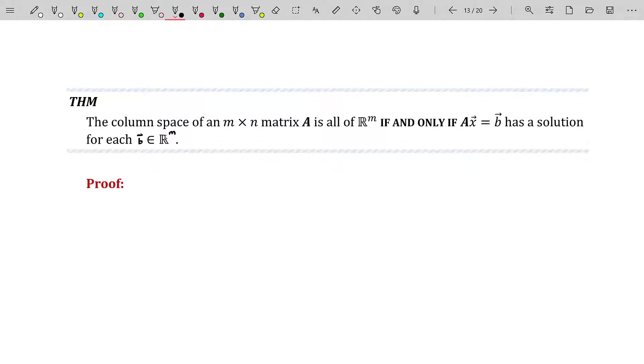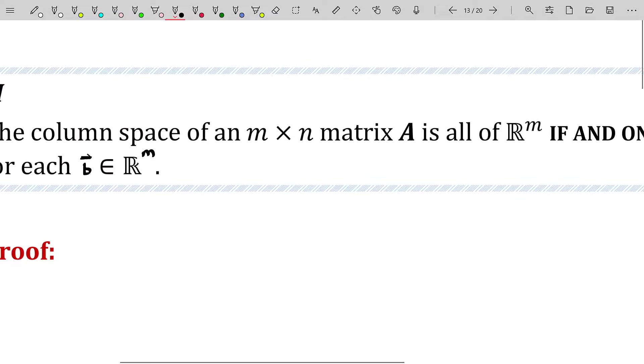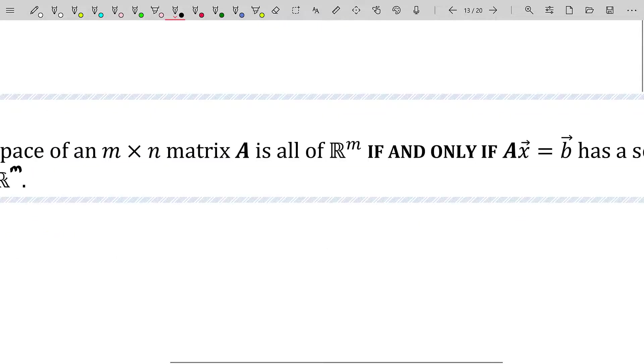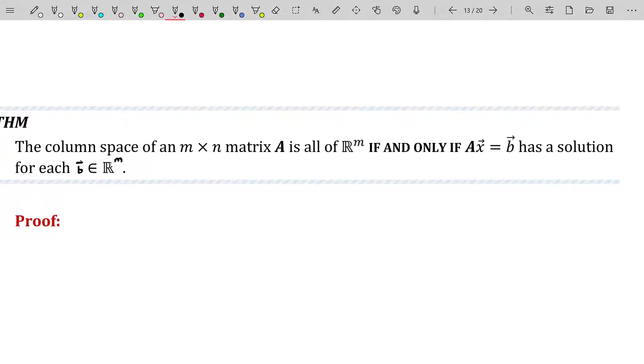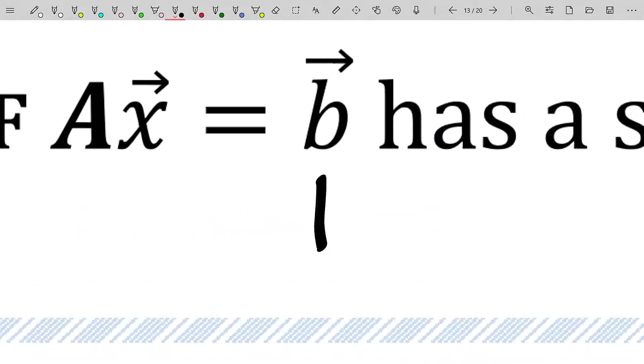Now a theorem—I'm not going to prove this because it's proved in most linear algebra textbooks, I just want to discuss it. It's an if and only if, so it goes both directions. The column space of an m by n matrix A is all of ℝᵐ if and only if the equation Ax equals b has a solution for every single b in ℝᵐ. Let me read this backwards: if you are handed a matrix equation and they say b is arbitrary but this equation always has a solution, we already know from previous work that there are many implications from that statement.